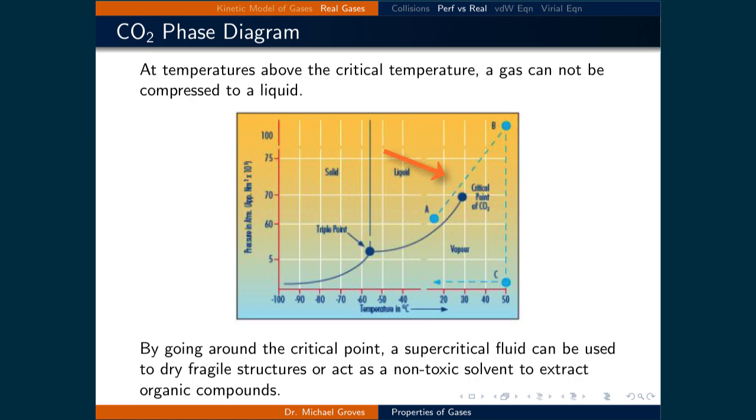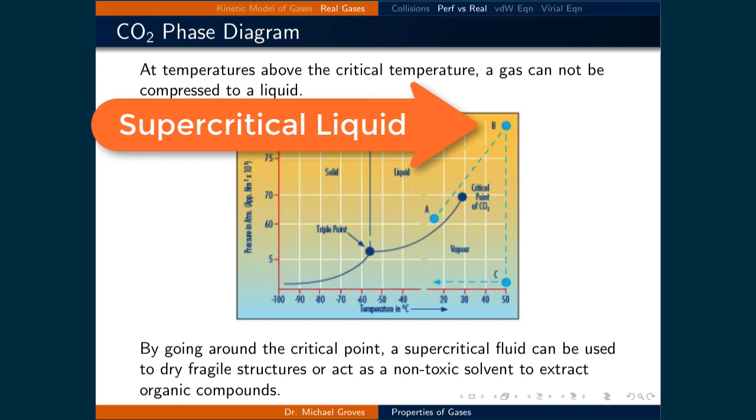Pretend that we have a sample of CO2 initially in the liquid phase. If the temperature and pressure are increased, such that it stayed a liquid past the critical point, the CO2 becomes a supercritical liquid. It is neither a gas or a liquid, but a combination of both.